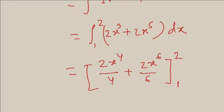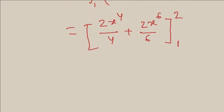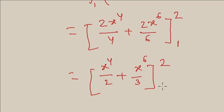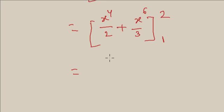From 2 to 1. So this is equal to x to the power 4 by 2 plus x to the power 6 by 3, from 2 to 1. That is equal to 2 to the power 4 by 2 plus 2 to the power 6 by 3.